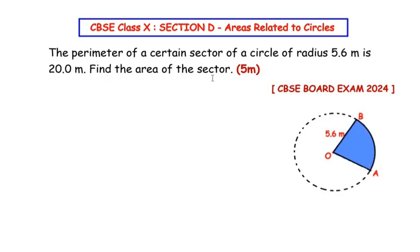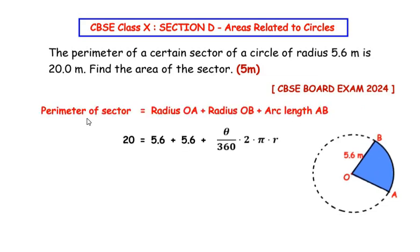We have to find out the area of the sector, so let us write down the perimeter of the sector first. The perimeter of sector AOB is given as radius OA plus radius OB plus the arc length AB. Here we have substituted the values of perimeter and radius. So perimeter is 20 meters equals 5.6 plus 5.6 plus the arc length. The arc length value is not given, so we have written its formula instead: θ/360 × 2πr, where θ represents the central angle the arc length AB makes with the center of the circle.